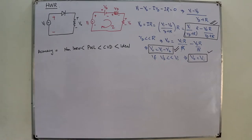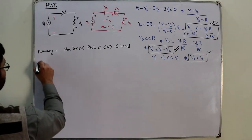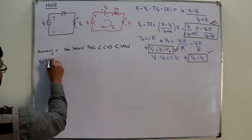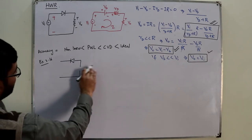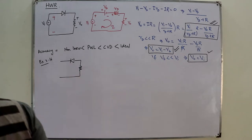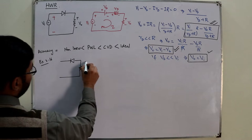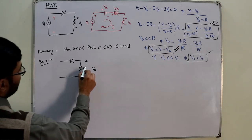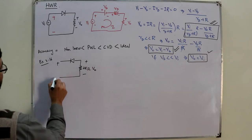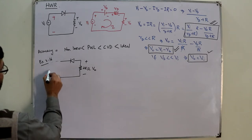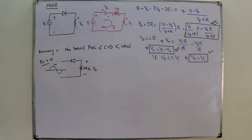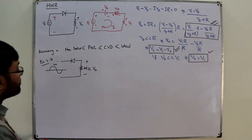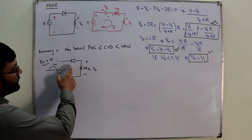Let's move to Example 2.16. We have a half wave rectifier circuit with a 2 kilo-ohm output resistor and a sinusoidal source with a maximum value of 20 volts. The required output is the output waveform. Using the ideal diode model, we can directly determine the behavior.